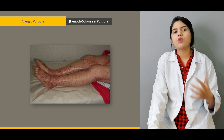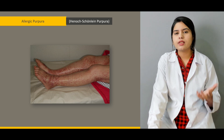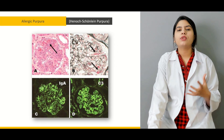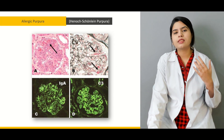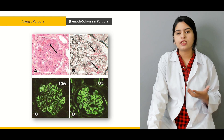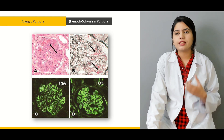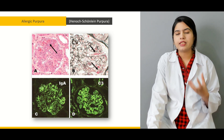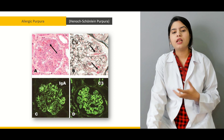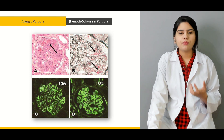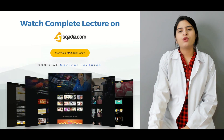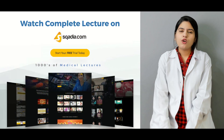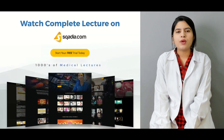Then we will discuss allergic purpura in detail — its causes, clinical features, and the organs it affects. We will also discuss its pathology, morphology, and histological appearance, including how necrosis and fibrin aggregation can be seen in the kidney and other parts of the body.